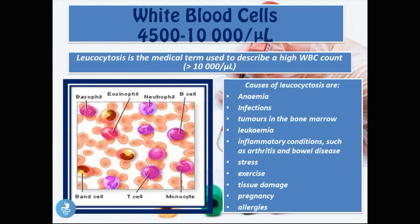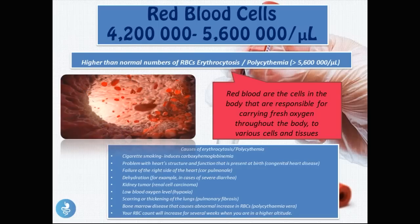The opposite of leukopenia is leukocytosis, the medical term for a high white blood cell count — anything above 10,000 white blood cells per microliter. Some causes of leukocytosis include anemia, infections, tumors in the bone marrow, leukemia, inflammatory conditions such as arthritis and bowel disease, stress, exercise, tissue damage, pregnancy, and allergies.